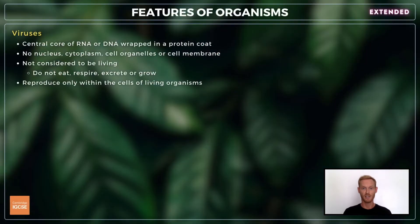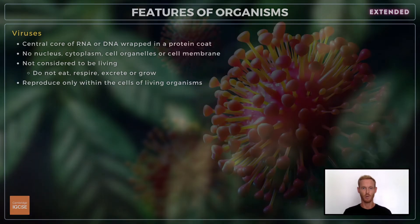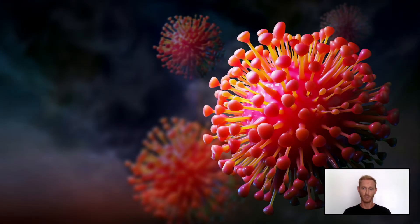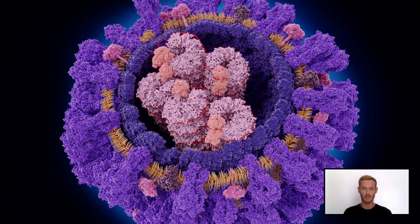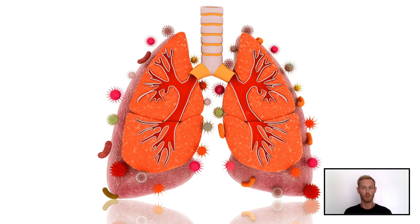For extended you also need to know about viruses, which aren't included in any kingdom as they don't demonstrate the characteristics of living things. Although viruses differ greatly in shape and structure, they all have a central core composed of RNA or DNA wrapped in a protein coat. They don't have a nucleus, cytoplasm, cell organelles or cell membrane, nor do they eat, respire, excrete or grow. Viruses are capable of reproducing, but only within the cells of living organisms.